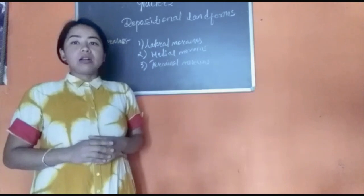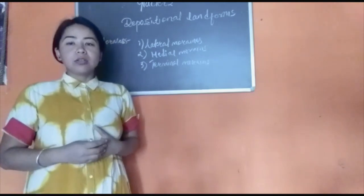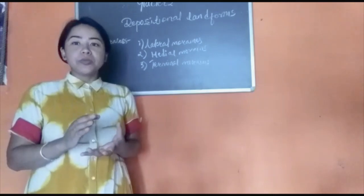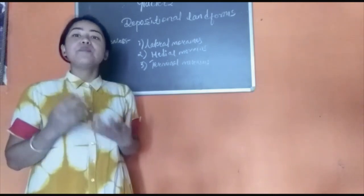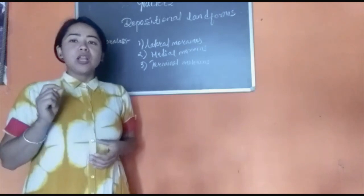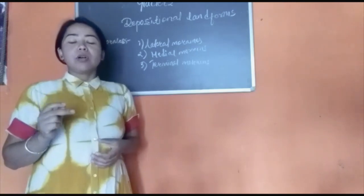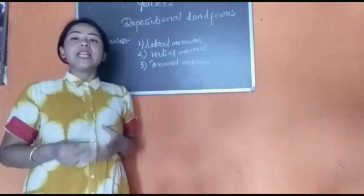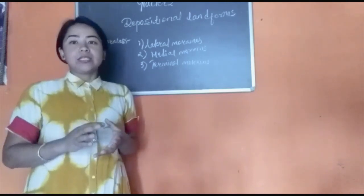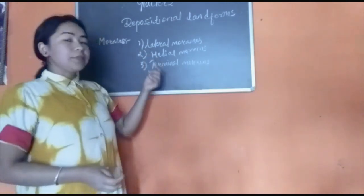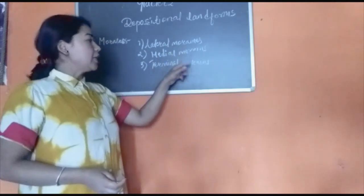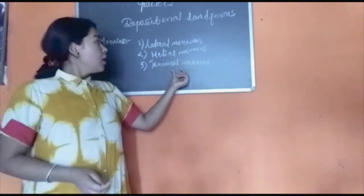Moraines are the small rock particles — or anything that comes across the glacier on its way and gets embedded in the glacier — known as moraines. It might be small rock particles, sand, clay, or anything that gets attached to the glacier. There are three types of moraine: lateral moraine, medial moraine, and terminal moraine.